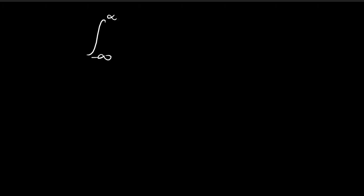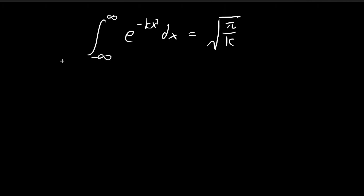We're going to use a trick here. Notice that the Gaussian integral of e to the power of negative k x squared dx from negative infinity to positive infinity is equal to the square root of pi over k. You can prove this with a double integral, but let's say we already know this result. Let's call this expression f of k.